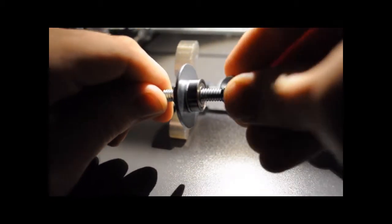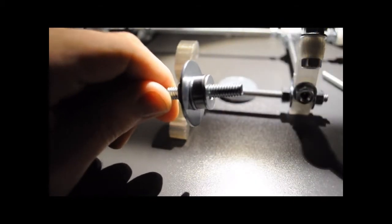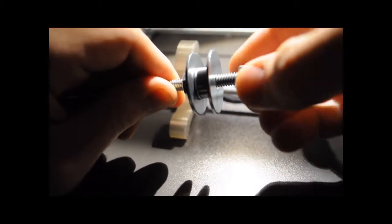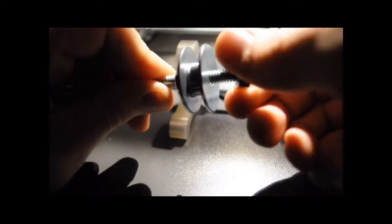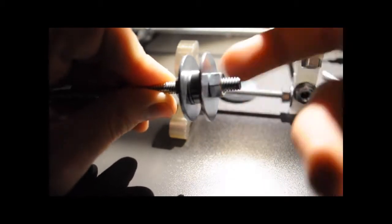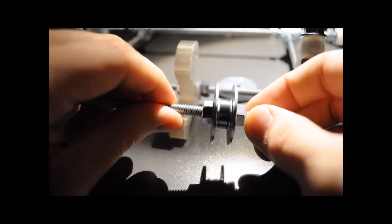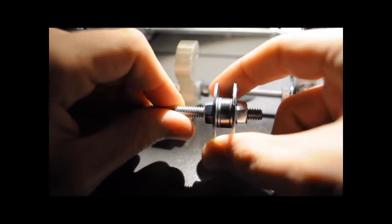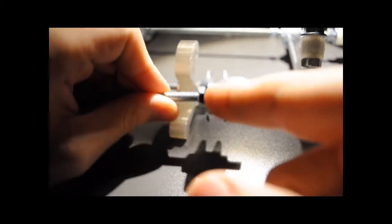Then you just reverse the process: washer, fender washer, and a nut that I can't put on because I'm trying to look through the camera. There we go. So you got your bearing right in the center there. The two fender washers keep the belt in place, so it just rides in the center.